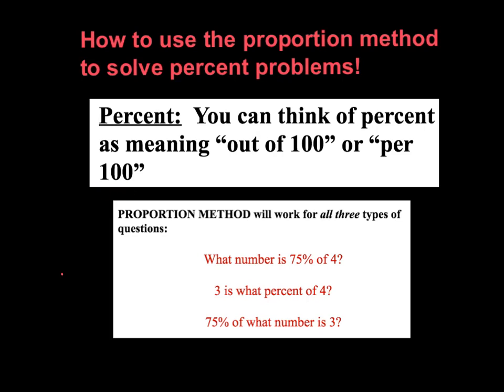I like the proportion method for solving percent problems because it works for three different types of problems. It works for problems that are set up this way: what number is 75% of 4? It also works for problems that are phrased in this way: 3 is what percent of 4? And lastly, it works for problems that look like this: 75% of what number is 3?